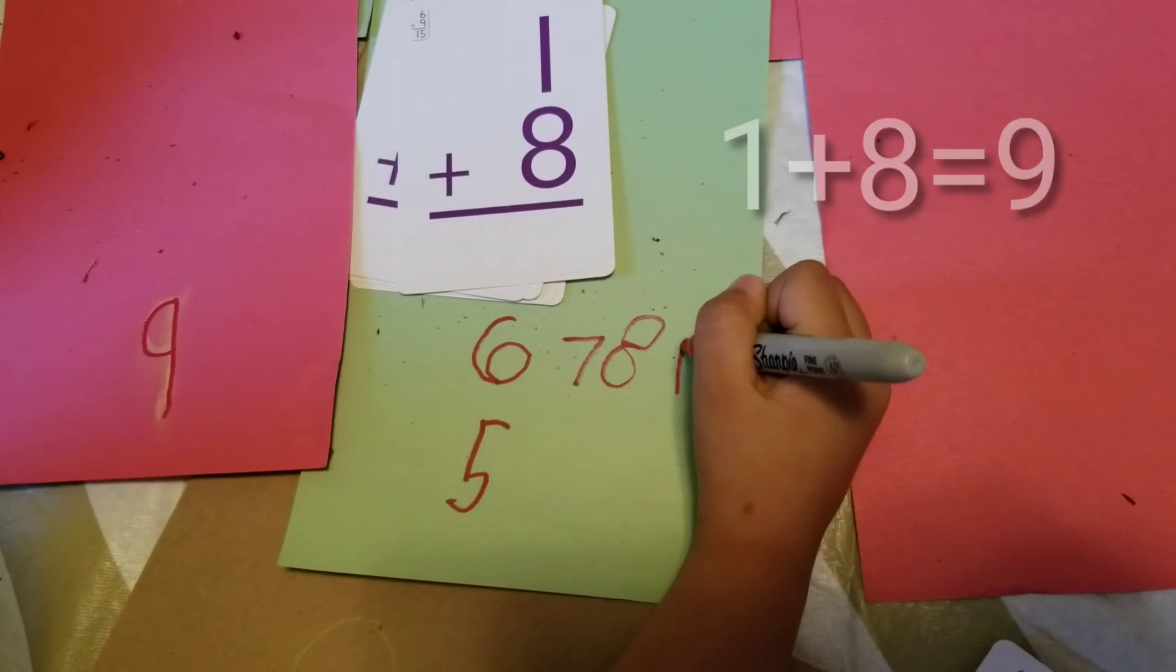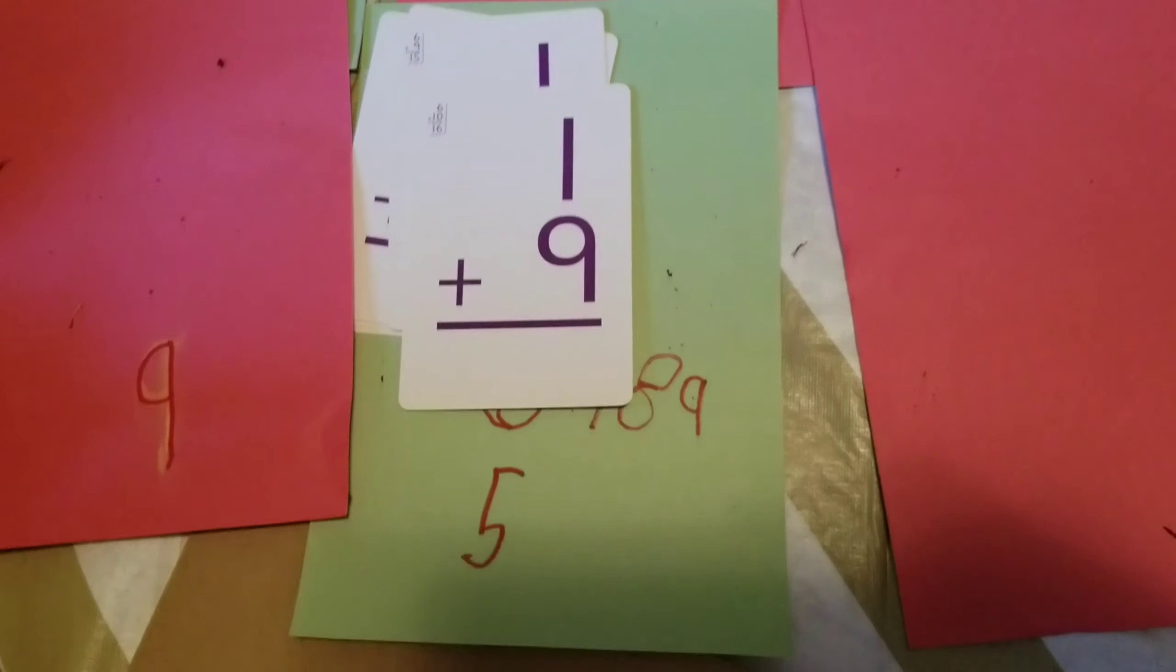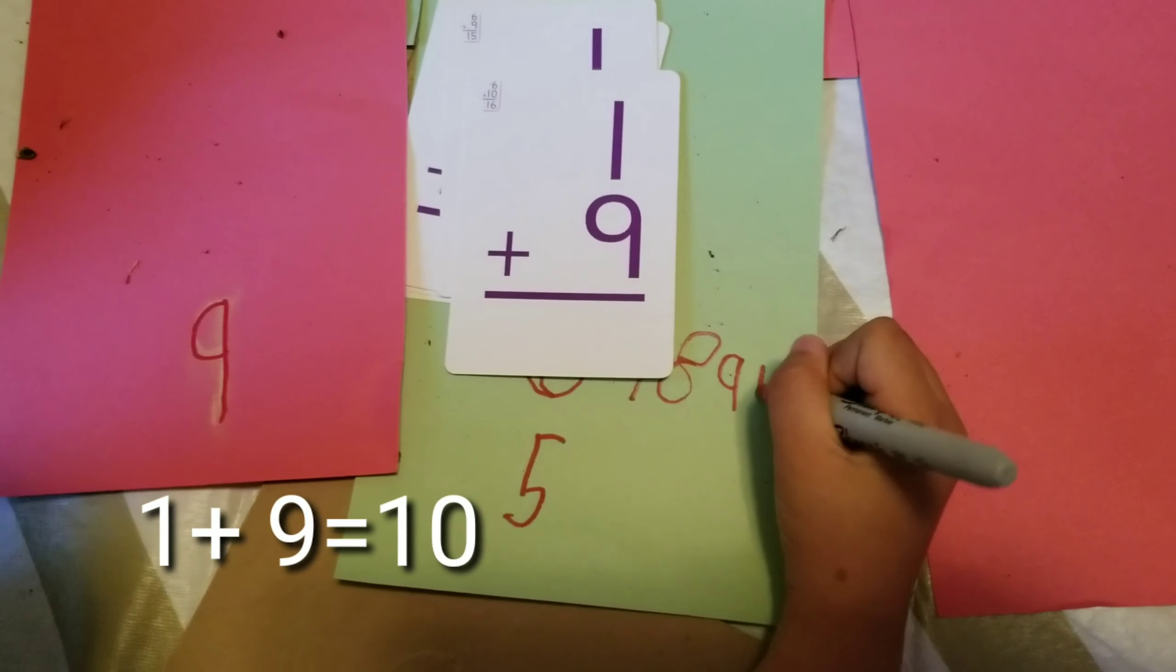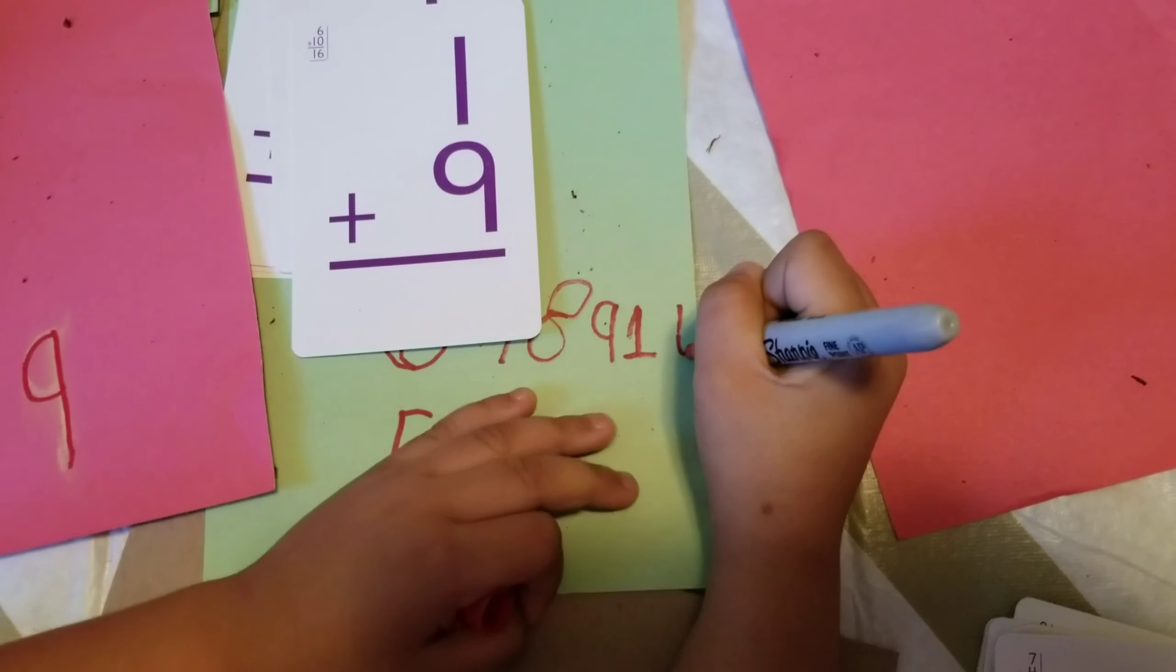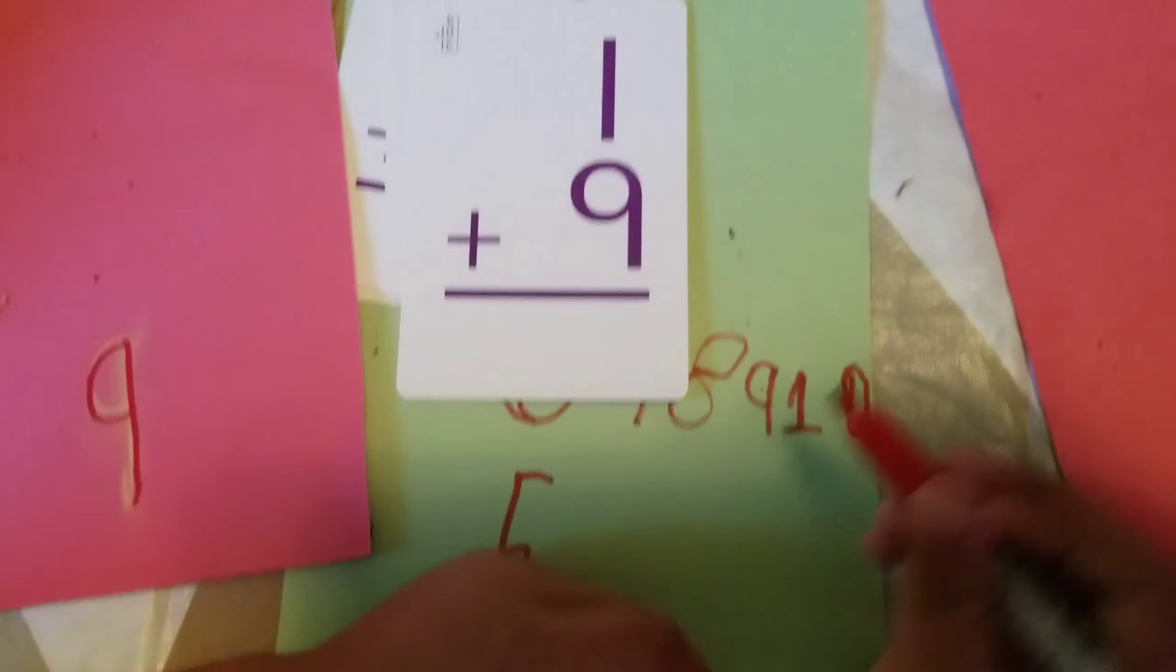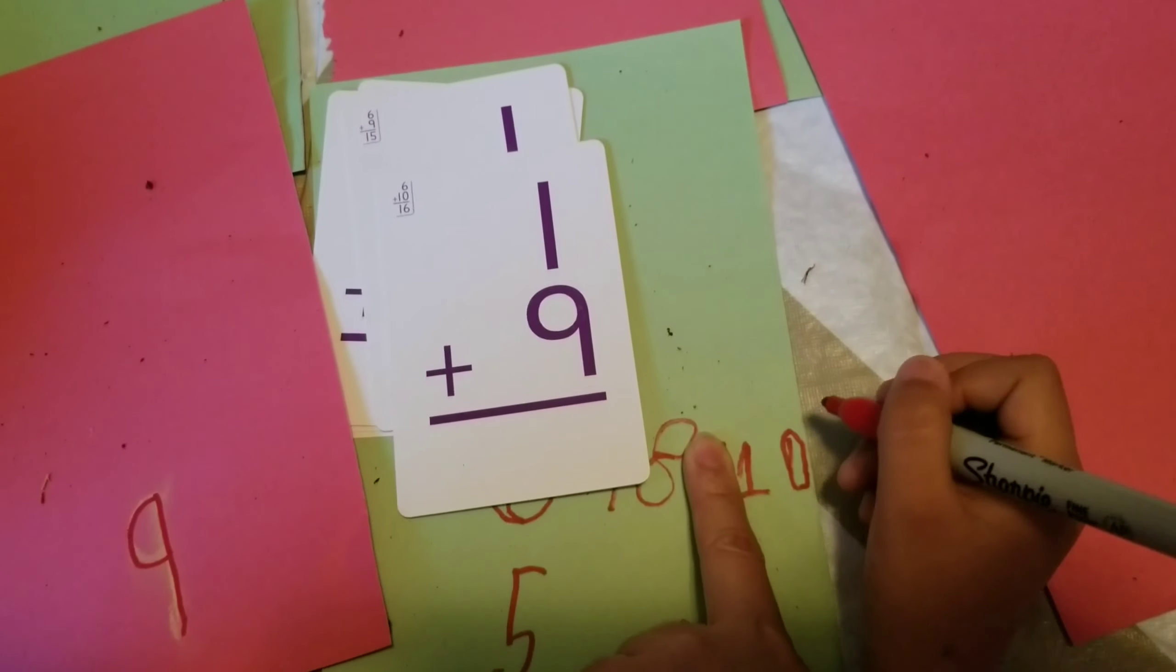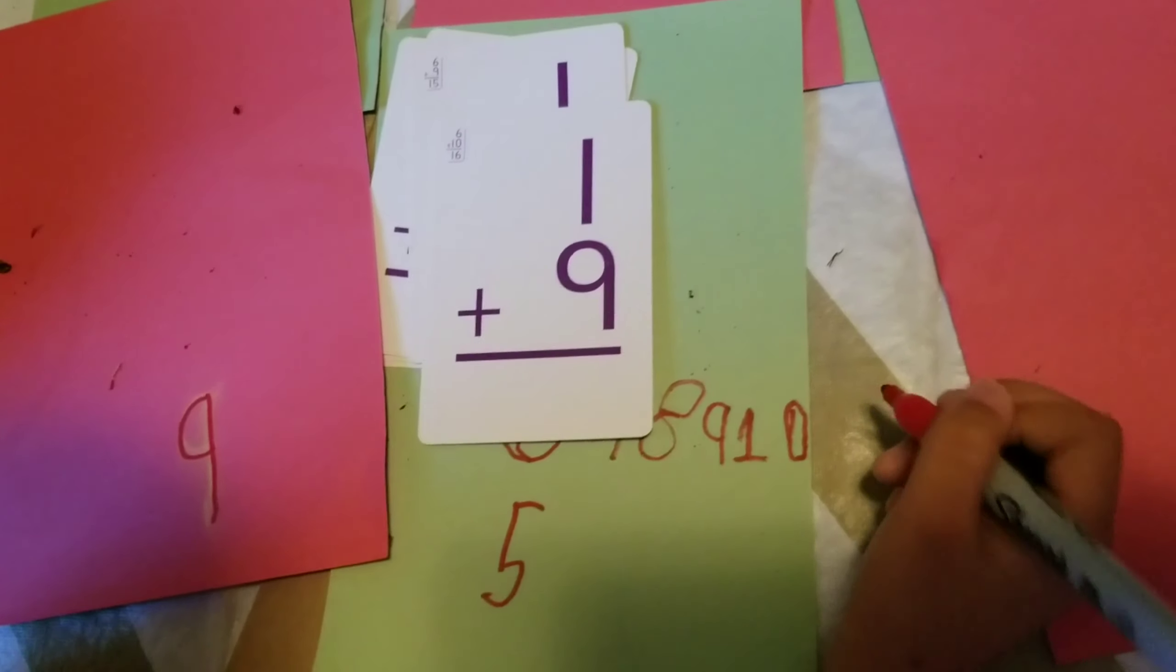Two, how about one plus nine? One, three, four. What number is that? Zero. So one plus nine equals? Zero. I mean, ten, ten. Very good!